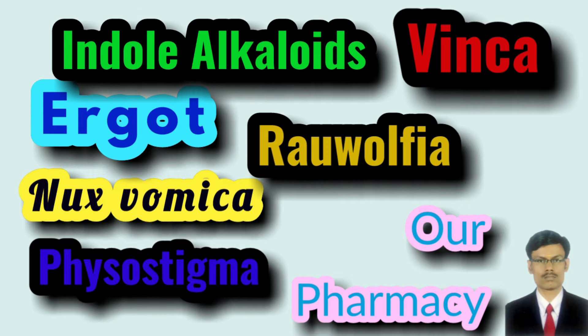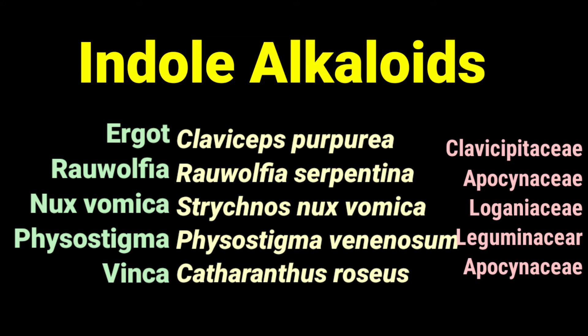Welcome to our pharmacy informative session. Today we are going to know some important examples of crude drugs belonging to the indole group of alkaloids. Indole is a fused heterocyclic ring system — a pyrrole ring fused with benzene. It is otherwise called benzo-pyrrole.